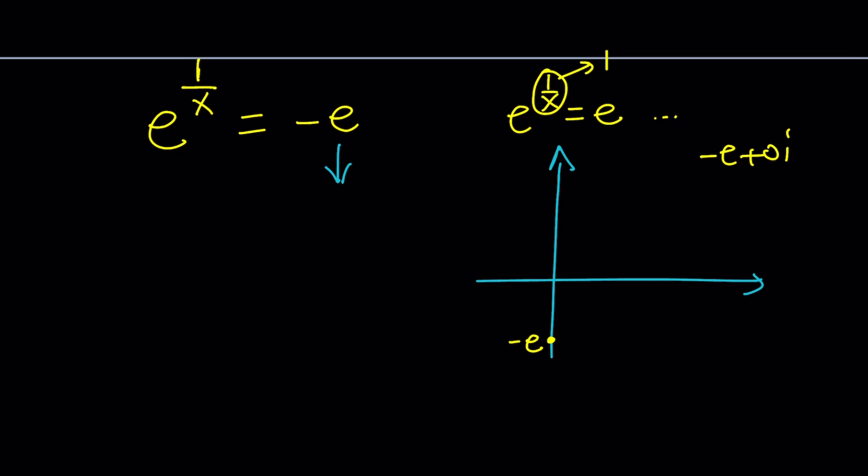And the angle that it makes... that's not right, sorry. That would be a negative ei. Yes, negative e would actually be on the negative real axis. So this is real, this is imaginary. So negative e would be somewhere here. And the angle that it makes or the argument or the theta is going to be in this case pi.